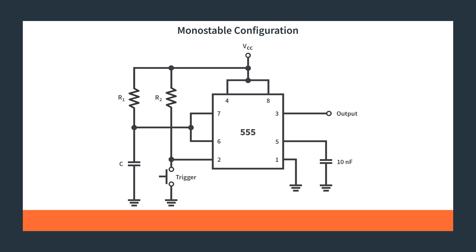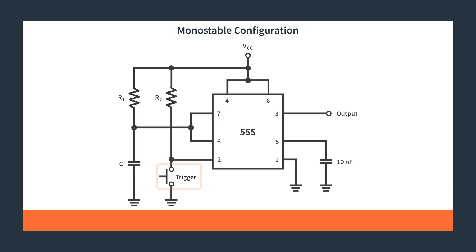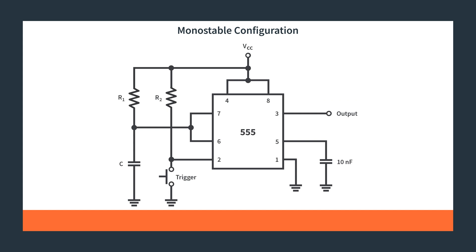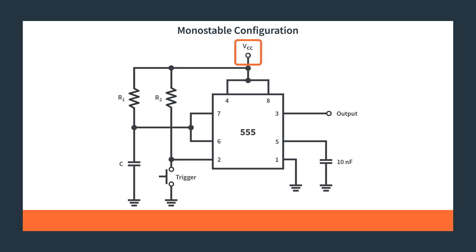This is your typical diagram for a 555 timer in the monostable configuration. As you can see, there are two resistors, two capacitors, and a trigger, which is basically just a tactile switch. The output goes to whatever your output is. This 10 nanofarad capacitor is simply there so that your control input doesn't have any noise on it — it's basically absorbing any noise. R2 is just making it so that when you push the tactile switch, you aren't connecting VCC directly to ground, so the value is semi-arbitrary, just enough so the circuit doesn't burn up.